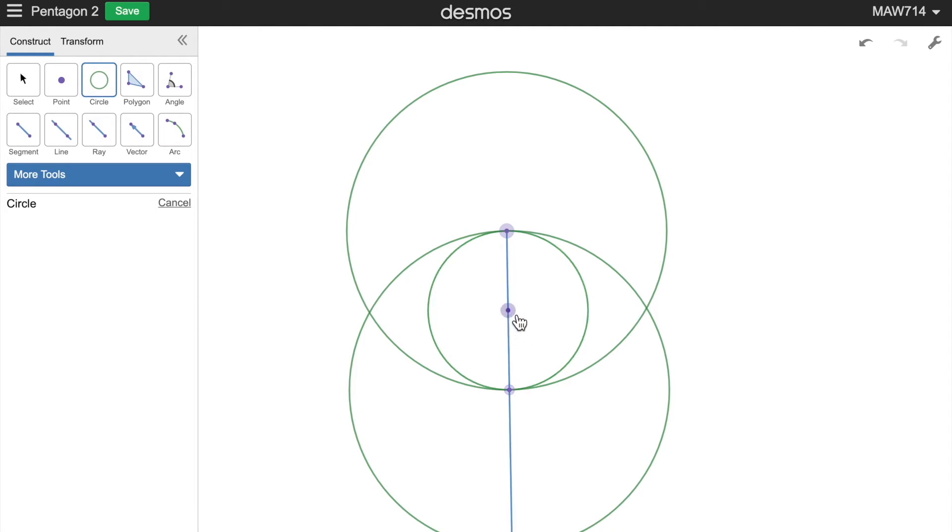Then we have to connect this point to this point here with a segment. Then we need to draw a circle from this new point here to this point to get this point.